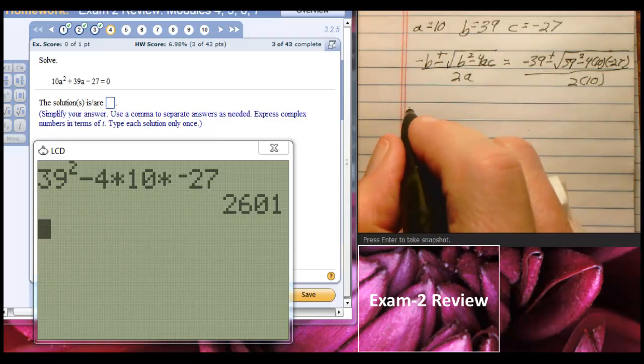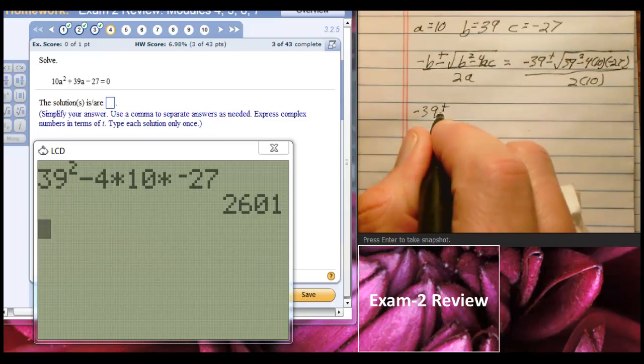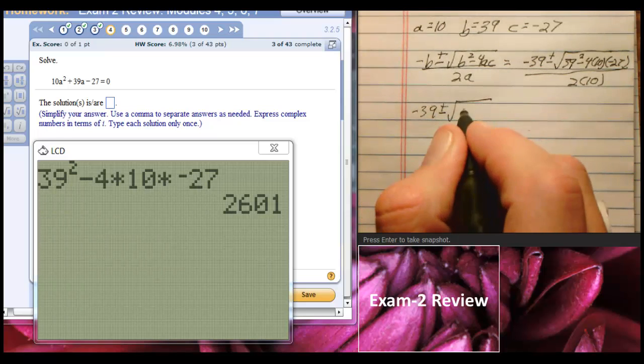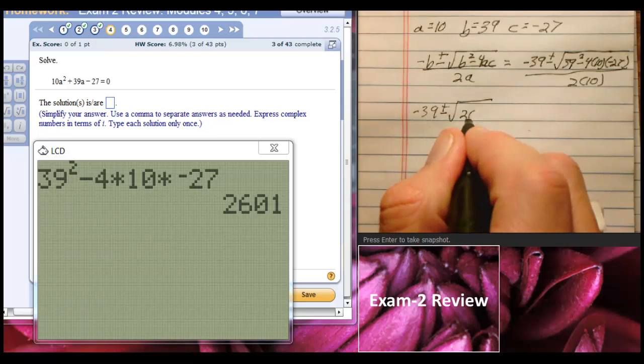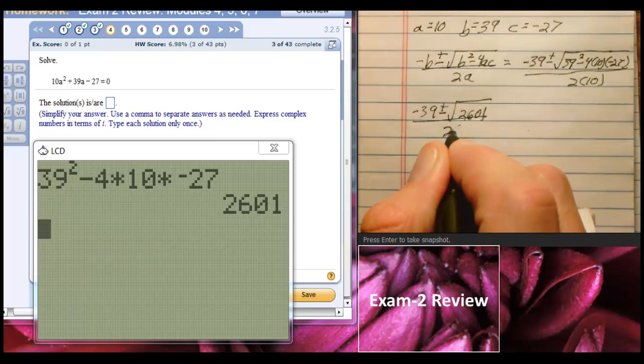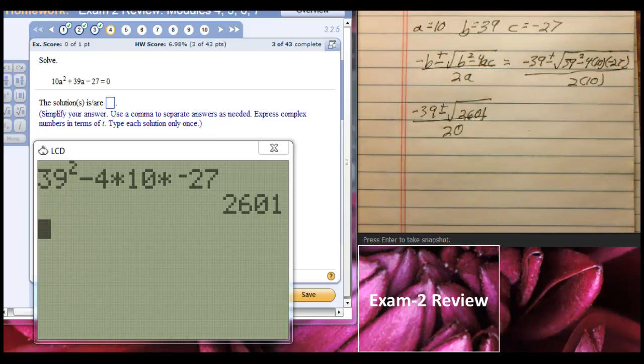So I'll have negative 39 plus or minus the square root of 2601 over 20, which is 2 times 10. All right, let's see if there's a square root of 2601. So 2nd x squared, 2601, enter. And there is. Yay!